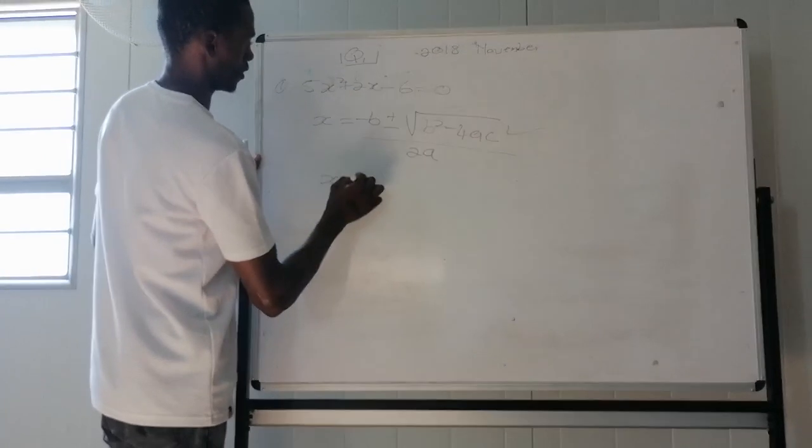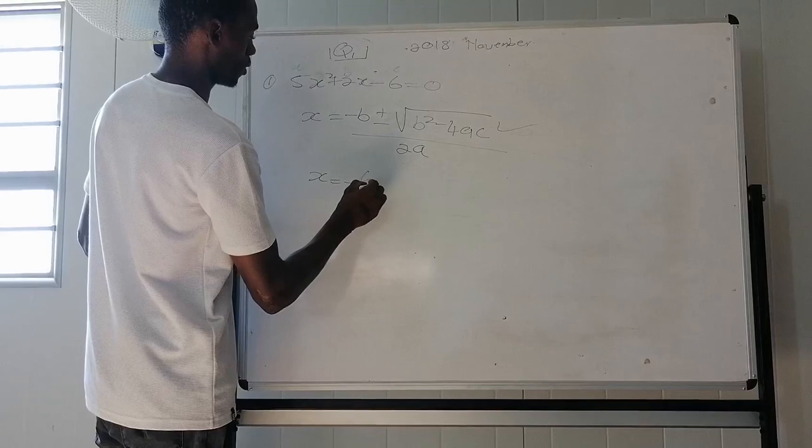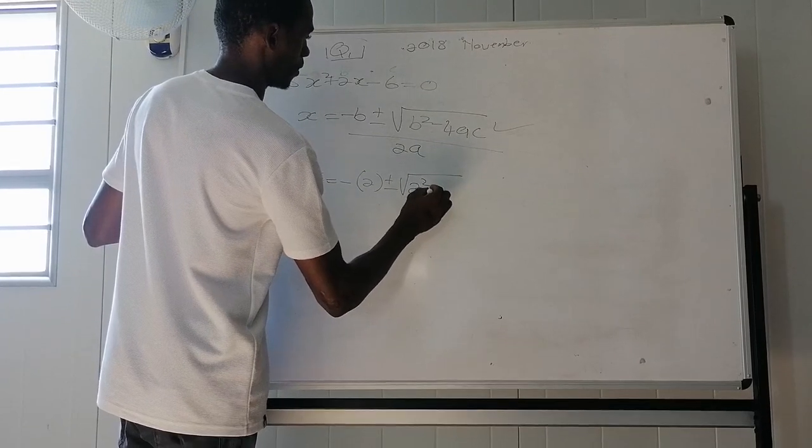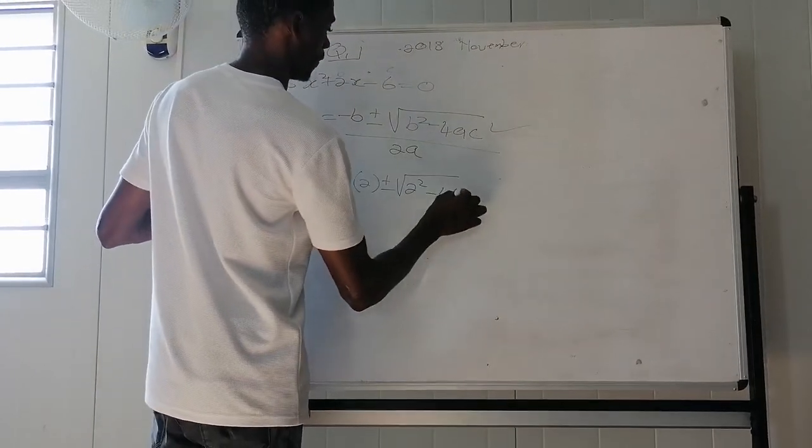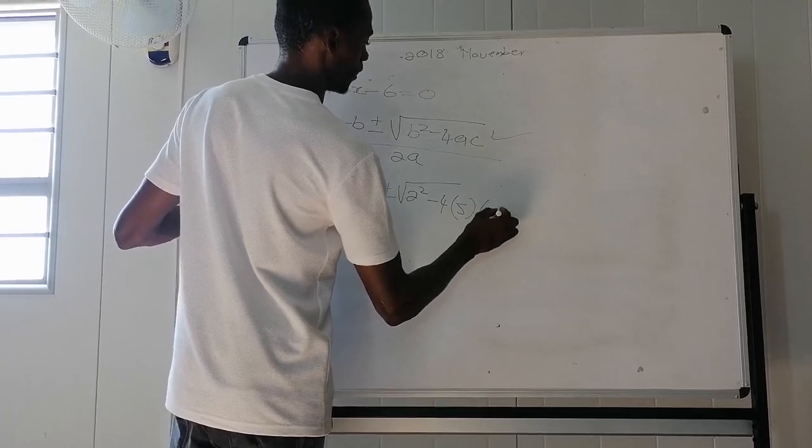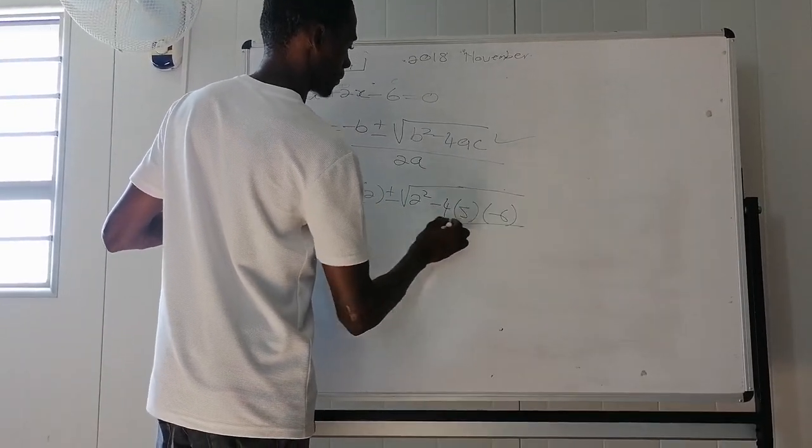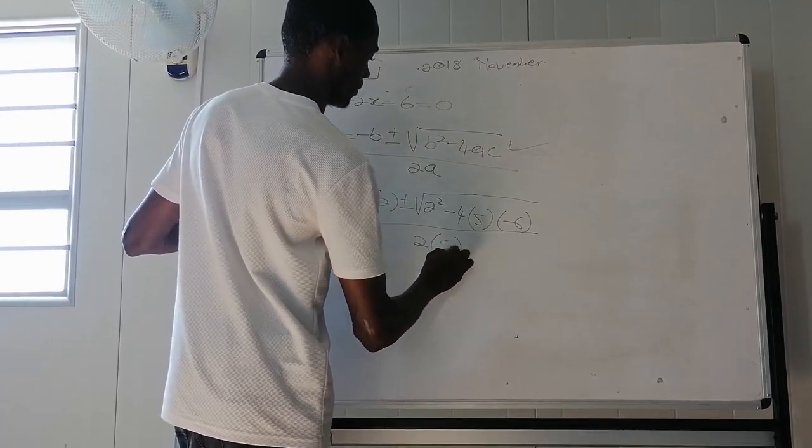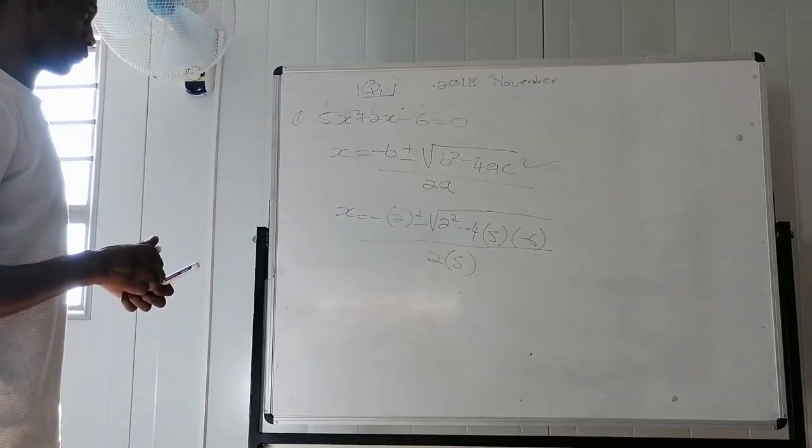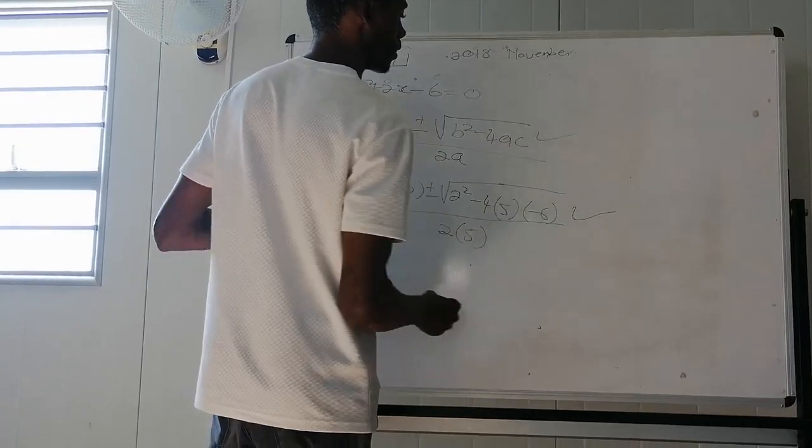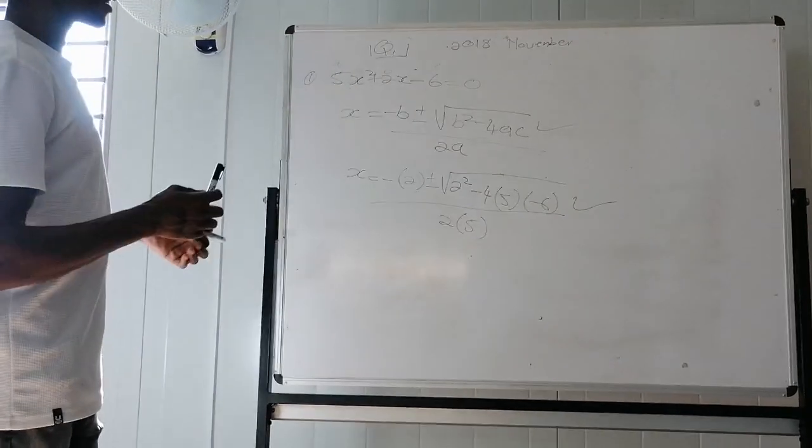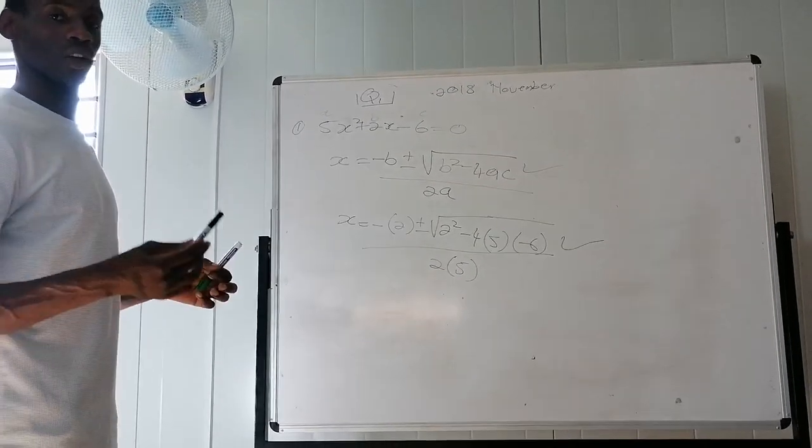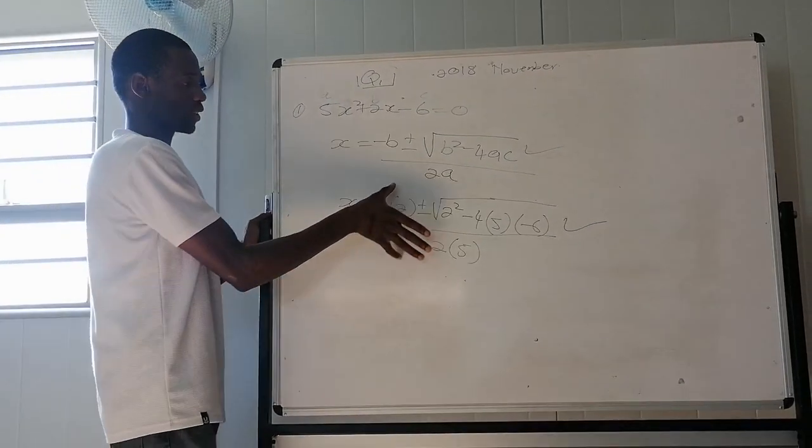And x is equal to negative, then your b is 2, plus or minus, root of 2 squared minus 4, your a is 5, your c is negative 6, all over 2 into 5. So this is also a mark, 2 marks.